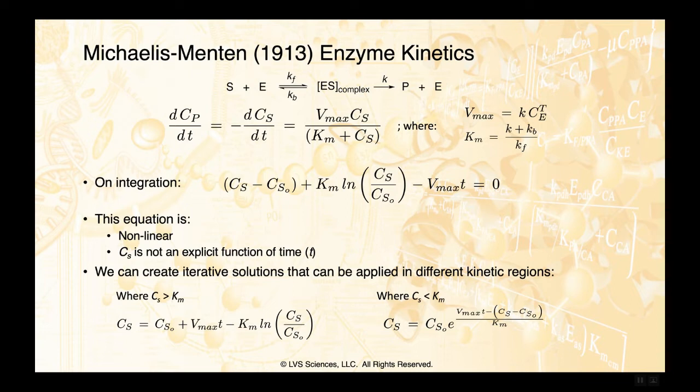We have two parameters that describe this. The first is Vmax, the maximum velocity of the reaction, which is really the rate constant times the concentration of enzyme. If you know the actual concentration of active enzyme, you can back out K, the intrinsic rate constant for the reaction, knowing Vmax. Generally, we fit Vmax because we don't normally know the actual enzyme concentration.